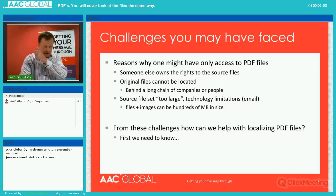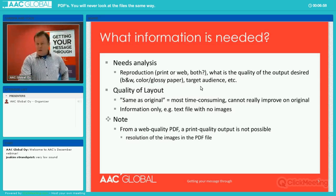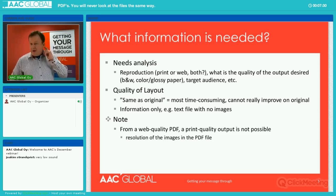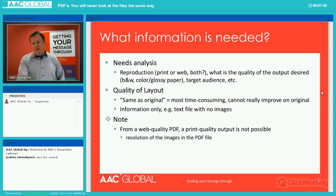Based on these challenges, how can we help localize PDF files? Things we need to know as a localization company: what is the reproduction? You have this PDF file that you're going to send to us — where is it needed? Is it going to be printed? Is it used for the web, or possibly both? What is the quality of the output desired — is it black and white or color? What is the target audience? Is it an application that a person might buy from a store, or is it for a person installing an air duct or whatever? That's really important to know, because it will also determine the quality of the output.